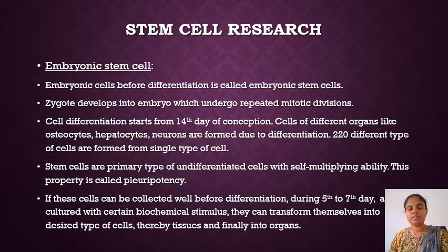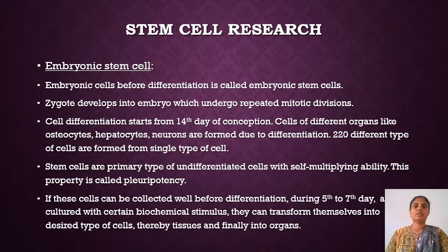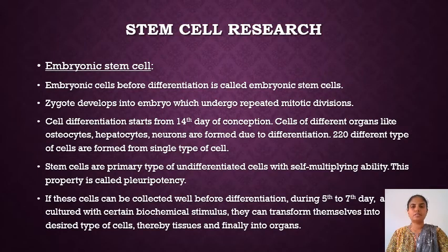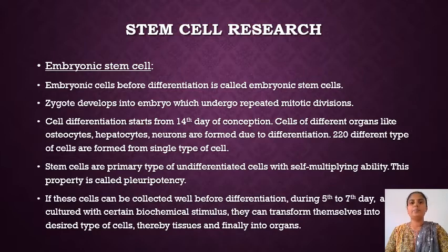Stem cell research is a revolutionary aspect after cloning in the field of biotechnology. Depending on the source, stem cells can be differentiated into two types: embryonic stem cells and adult stem cells. The embryonic cells before differentiation are called embryonic stem cells. When the zygote develops, it undergoes repeated mitotic division. Cell differentiation starts from the 14th day of conception, after which cells develop into various types such as osteocytes (bone cells), hepatocytes (liver cells), and neurons.